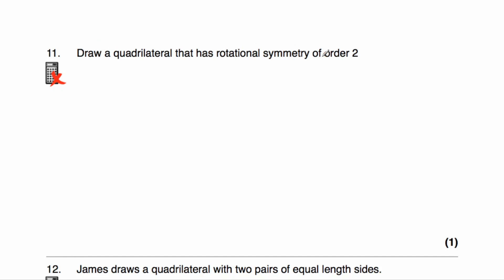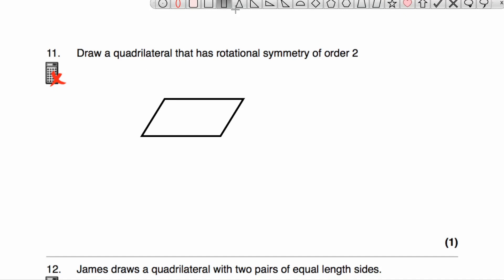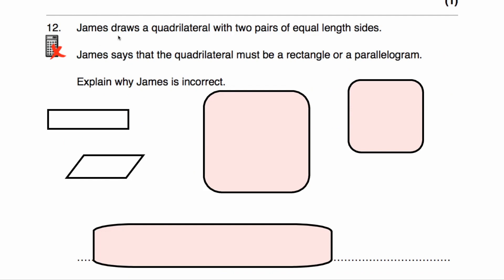Question number eleven asks us to draw a quadrilateral with rotational symmetry order two — meaning it lands on itself twice when spun through 360 degrees. Two examples would be a rectangle or a parallelogram, and both of those shapes will land on themselves twice when rotated through 360 degrees.